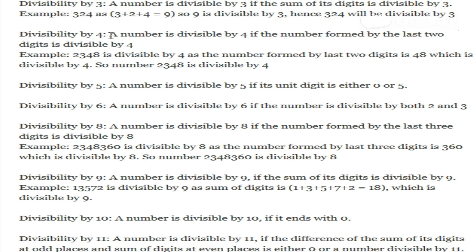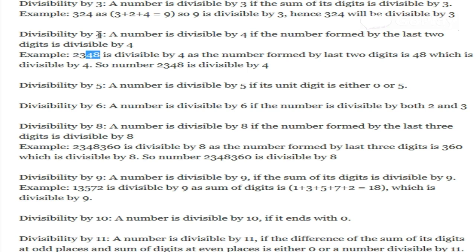Divisibility by 4: a number is divisible by 4 if the last 2 digits of that number are divisible by 4.